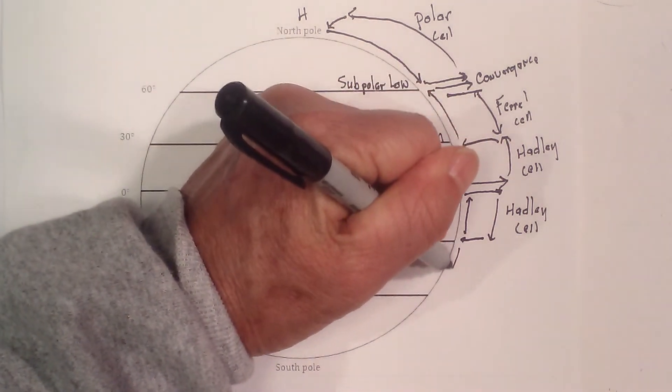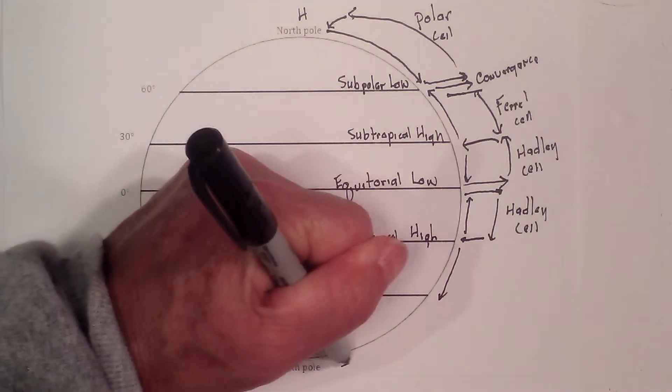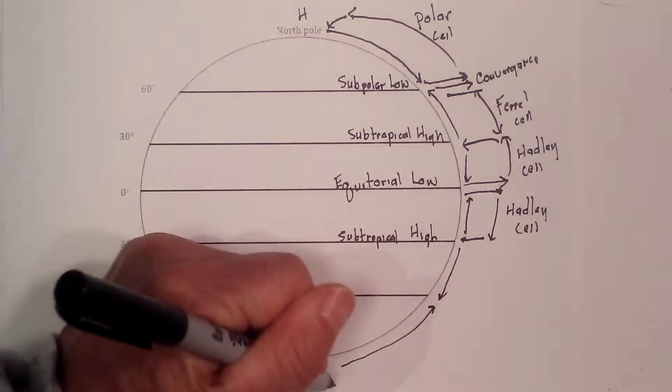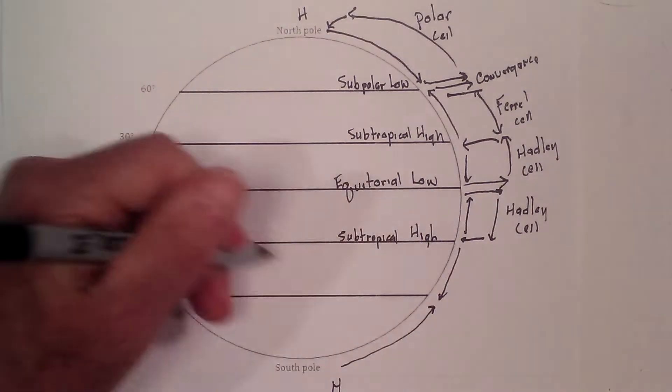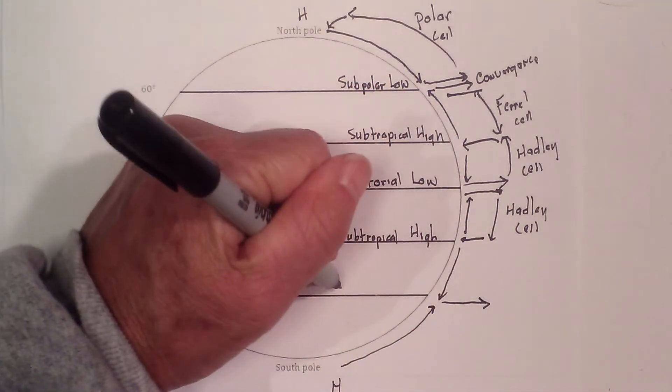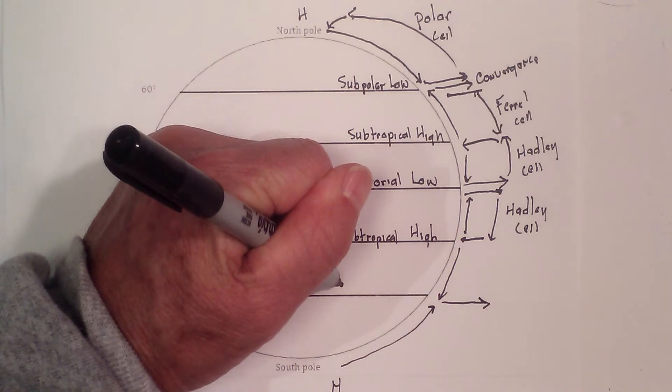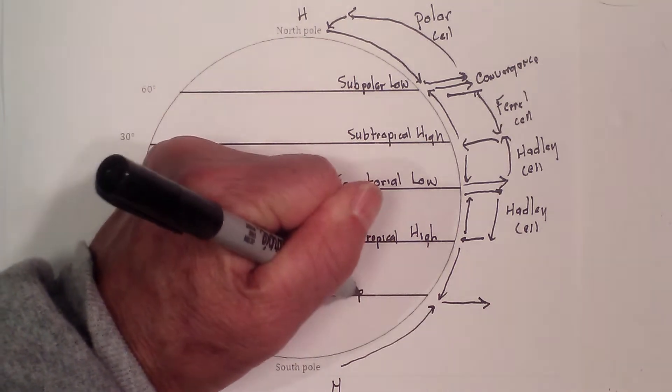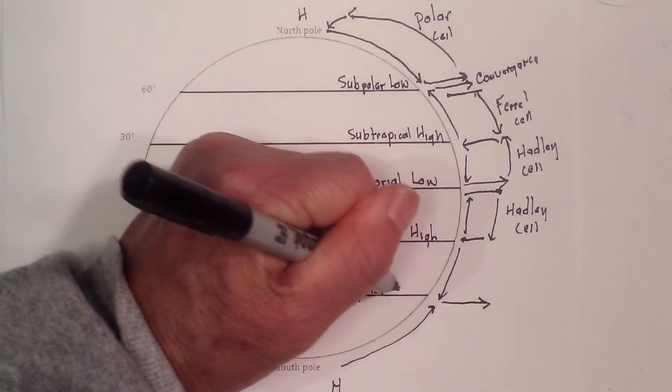From the high, it's going to spread this way. From the south pole, it's a high pressure system. It's going to flow north right here at this boundary. It starts to flow upward, creates a low pressure system called the subpolar low.